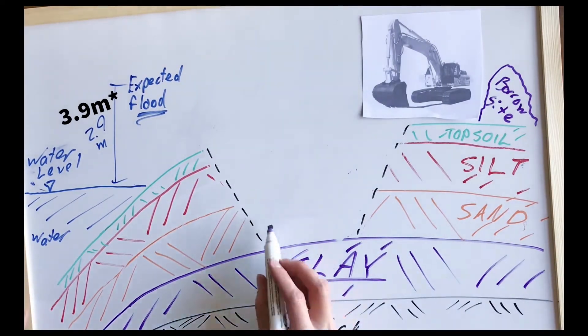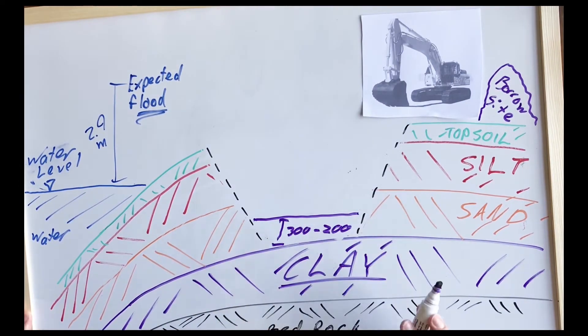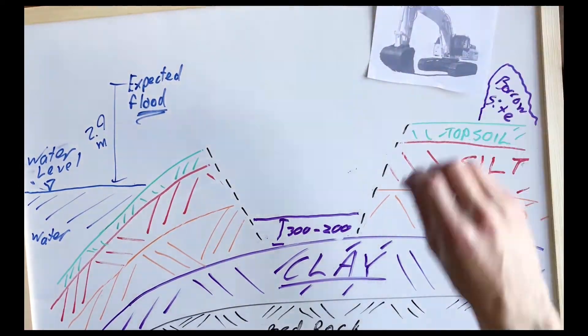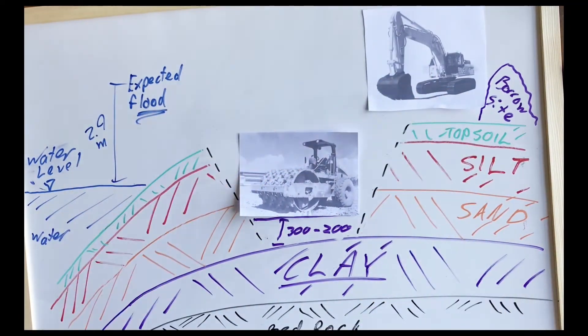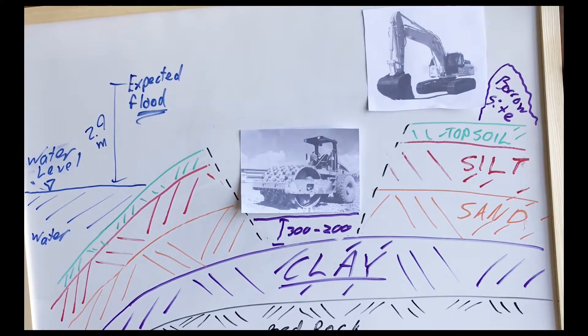Our borrow site material is then laid uniformly at a depth of 200-300mm and then compacted by the means of the sheep's foot roller. This is done until desired compaction is achieved.